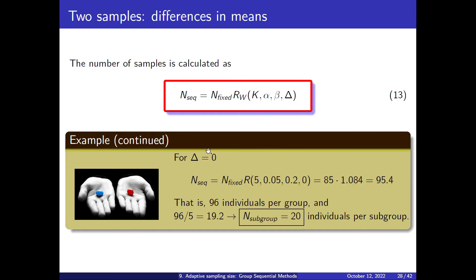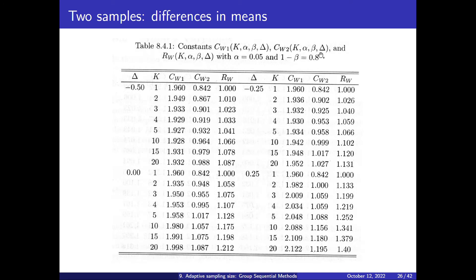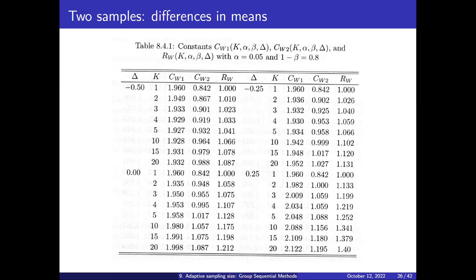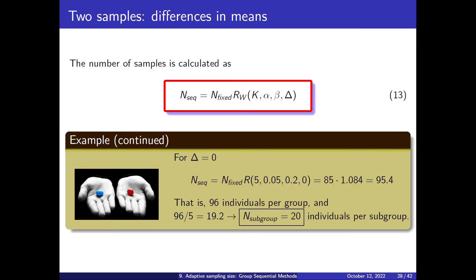In our example, let's say delta equals 0. We compute R — we will have 5 interim tests and are using a statistical power of 80%, so looking up 0, 5 stages in the table gives R. We will need 96 individuals per group in each one of the two drugs. Because it has to be a multiple of 5, we round up to 20 per stage.